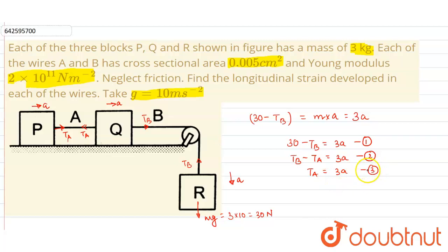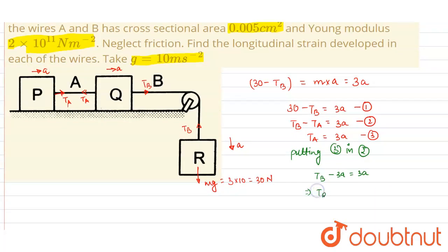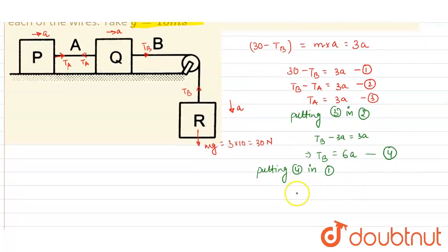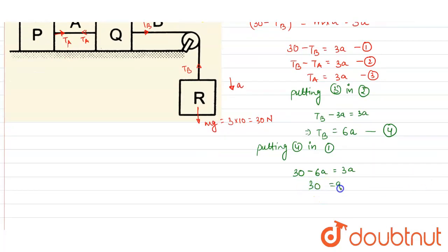From equation 3, putting the value of T_A into equation 2: T_B − 3A = 3A, so T_B = 6A (equation 4). Putting equation 4 into equation 1: 30 − 6A = 3A, giving 30 = 9A, so acceleration A = 10/3 m/s² (equation 5).